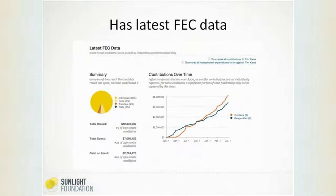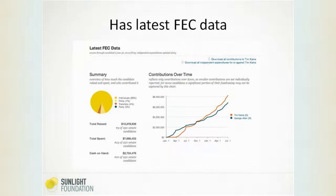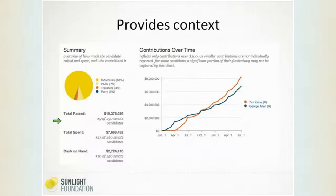Let me tell you about a few of them. One of the first things, right at the top, is this bar where you can set it for the current election cycle, somebody's whole career, or a previous election cycle. I'm going to assume most people are writing about this election cycle right now, so we have the latest Federal Election Commission data, displayed and broken down in different ways to provide a lot of context. You can see a summary: where is Tim Kaine's money coming from? The bulk is from individuals, some transfers, not very much from PACs — about 7%. We have the total amount he's raised: $10.3 million. Of the 250 candidates running for Senate, he ranks number nine. You can see the total he's spent, ranking number 23.